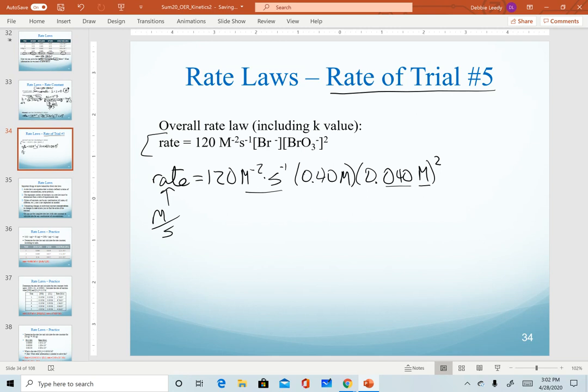And when we plug all of this in, we should get a final rate of 0.0... We're going to go to two sig figs because of all of our values in here. 0.077.